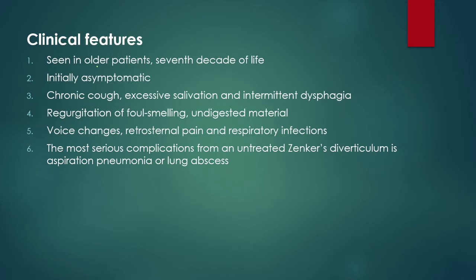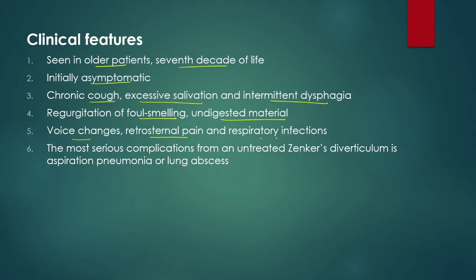What are the clinical features? It is usually seen in older patients, around the 7th decade of life. Initially, patients are asymptomatic. Patients can present with chronic cough, excessive salivation, and intermittent dysphagia. There can be regurgitation of foul-smelling undigested material. There can be voice changes, and patients can present with retrosternal pain and respiratory infections. The most serious complication from an untreated Zenker's diverticulum is aspiration pneumonia or lung abscess.